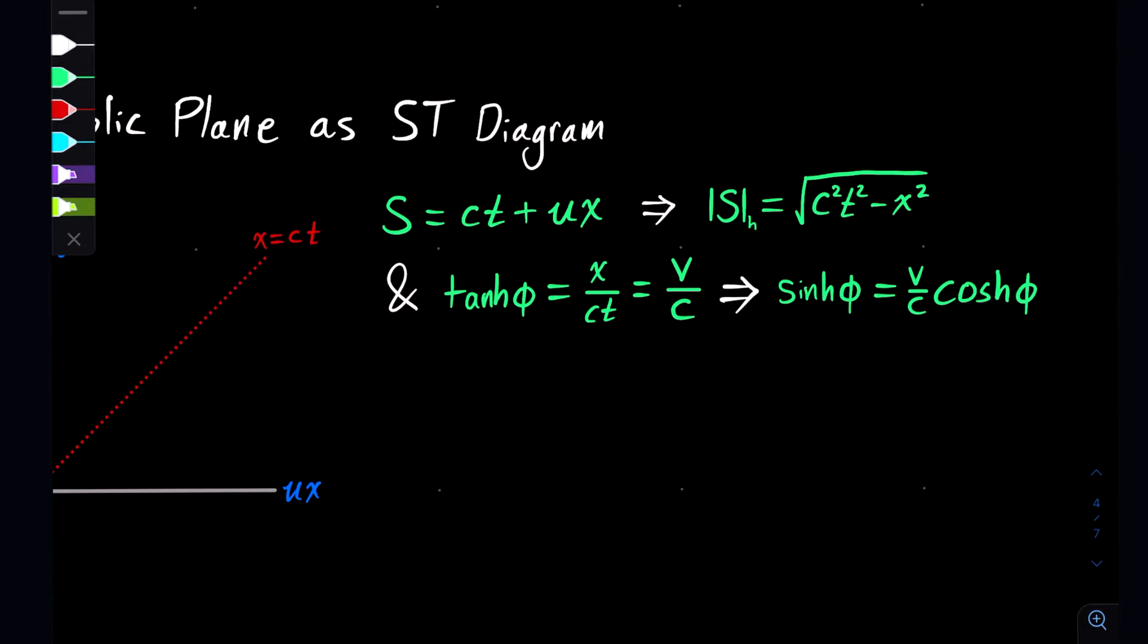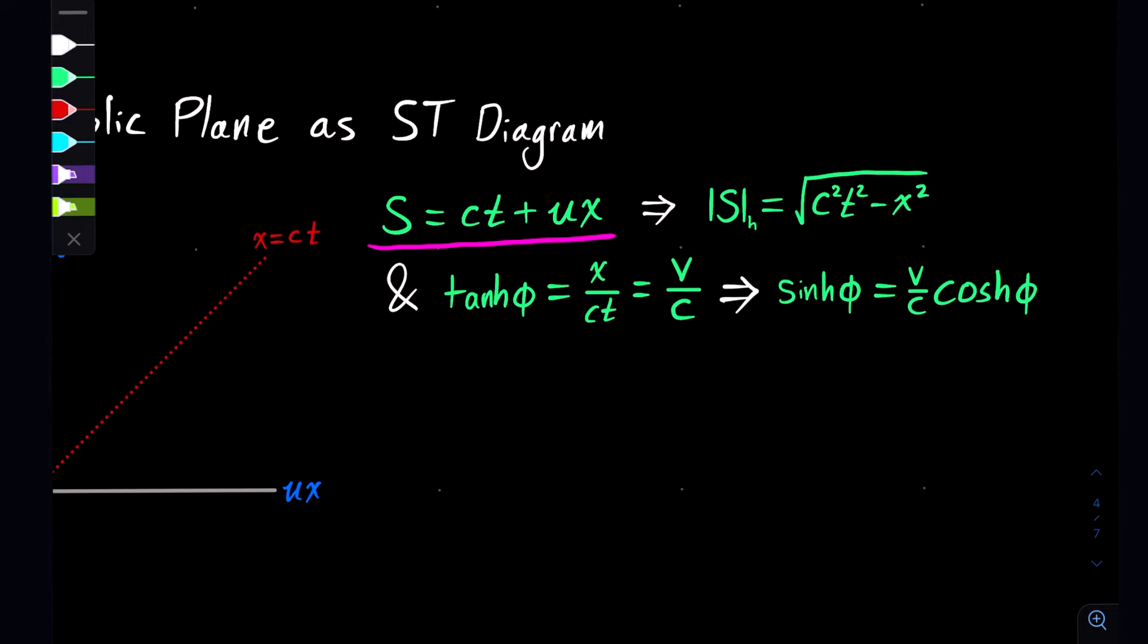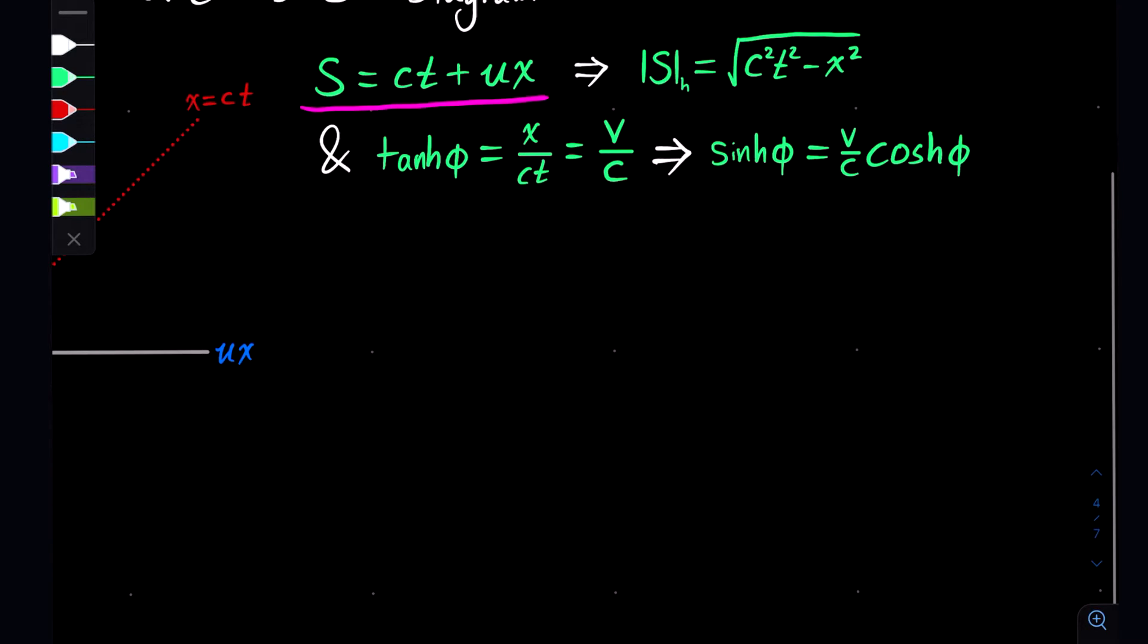Due to these conventions, you can define a spacetime event which is defined as the coordinate S = ct + ux. This leads to the hyperbolic modulus, or hyperbolic magnitude, whatever you like to call it, ending up as this distance here, which you'll recognize as the spacetime distance between two points. Using the definition of tangent, we get this x over ct, which simplifies to v over c. This results in the following identity here, which we can then continue to develop upon.